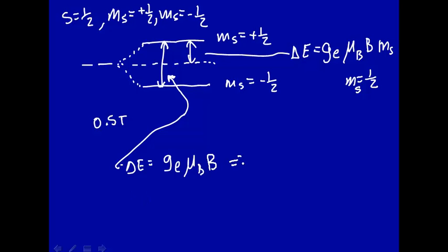We want the resonance frequency, so recall that this implies that the resonance frequency nu, you divide by H to get the resonance frequency in Hertz. So this would just be Ge mu B times the magnetic field divided by H.